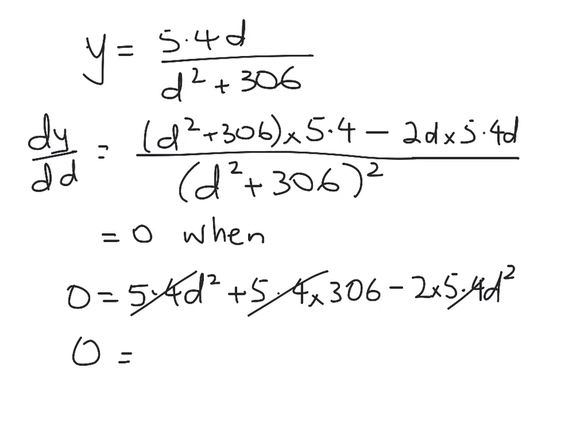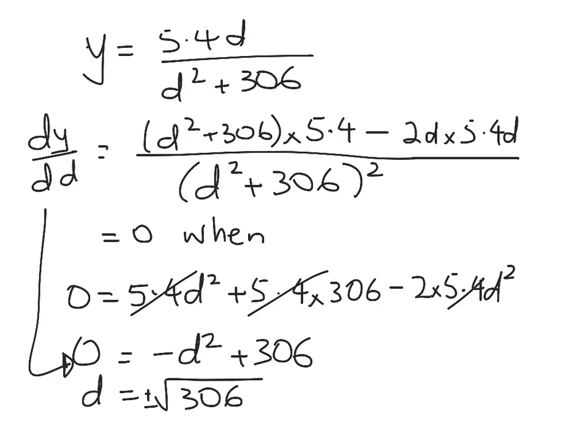So 0 equals negative d squared plus 306. Okay, so for a maximum that's what we need and then d is equal to the square root of 306. Officially, of course, it's the positive or negative, but distance has got to be a positive amount. So we're going to get d is equal to 17.5 metres.